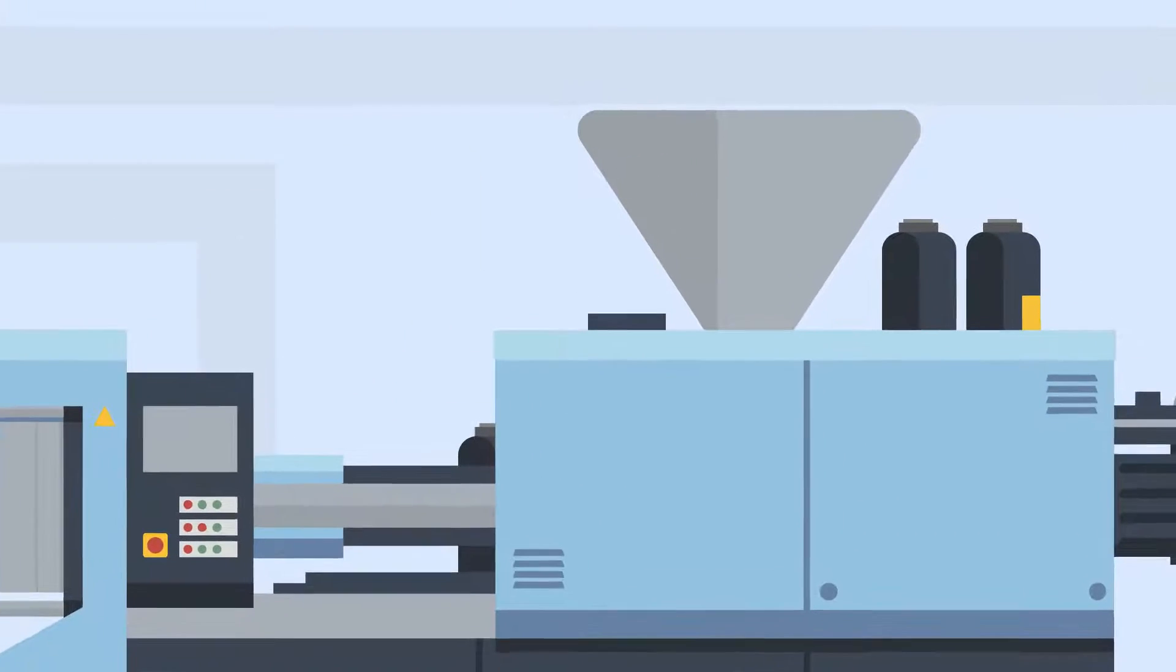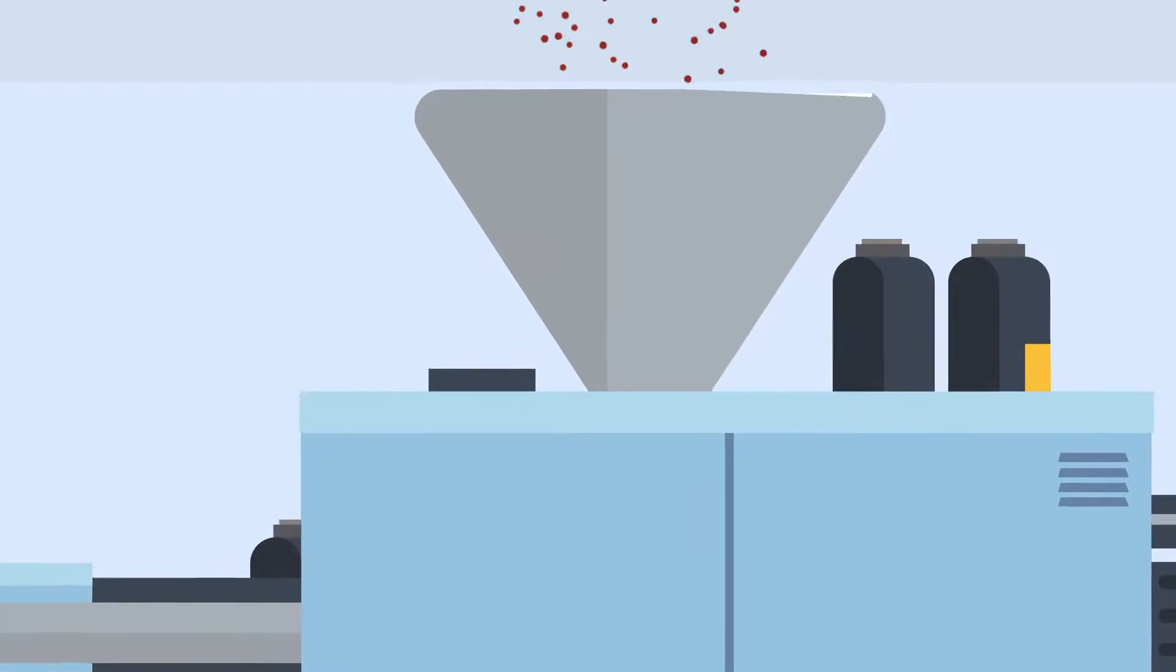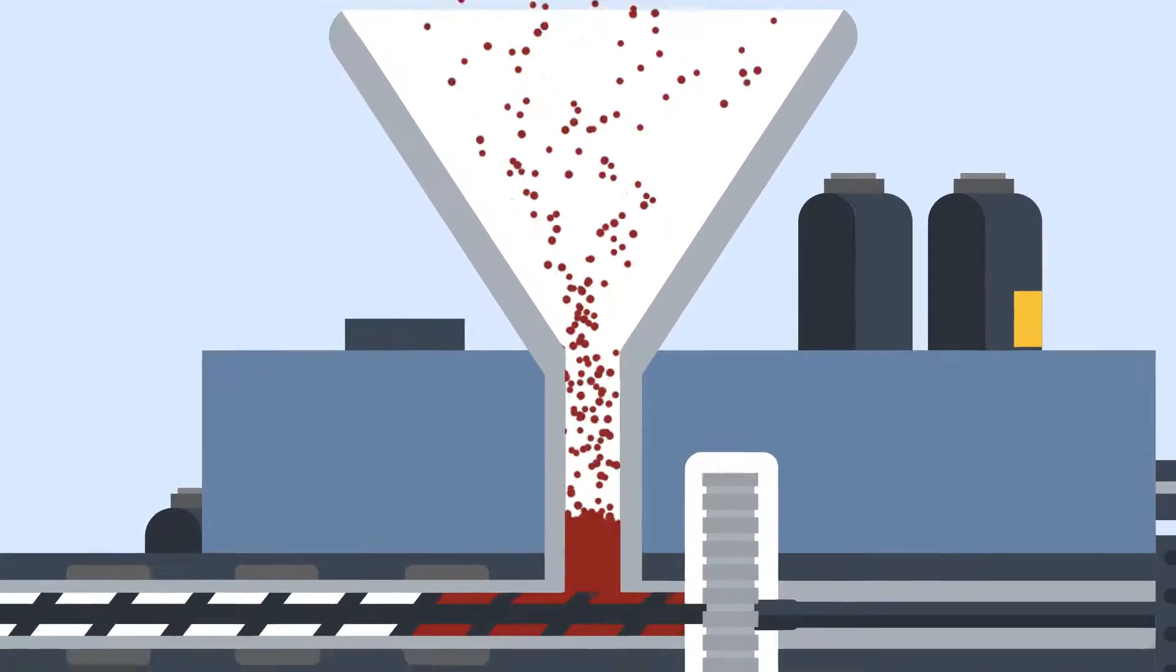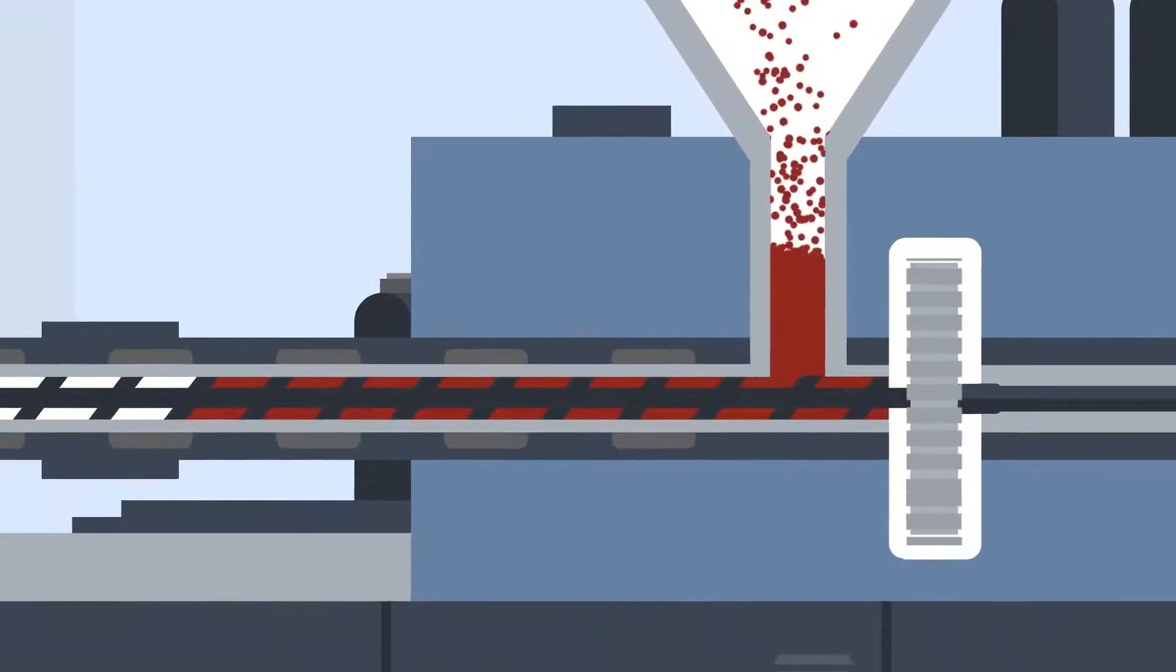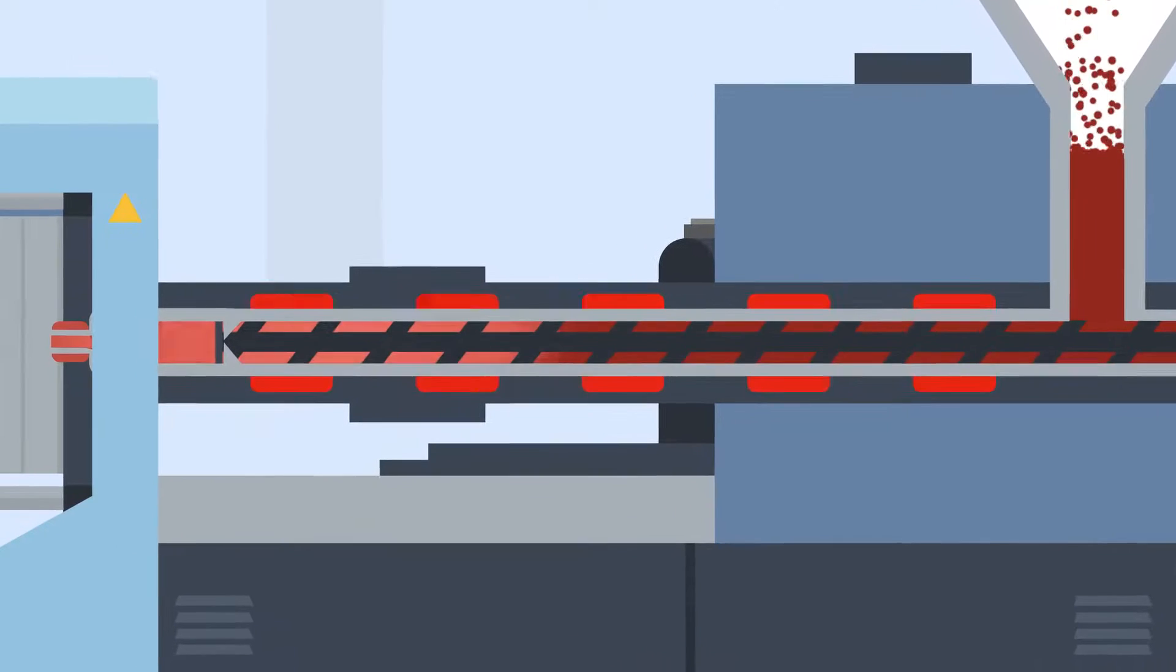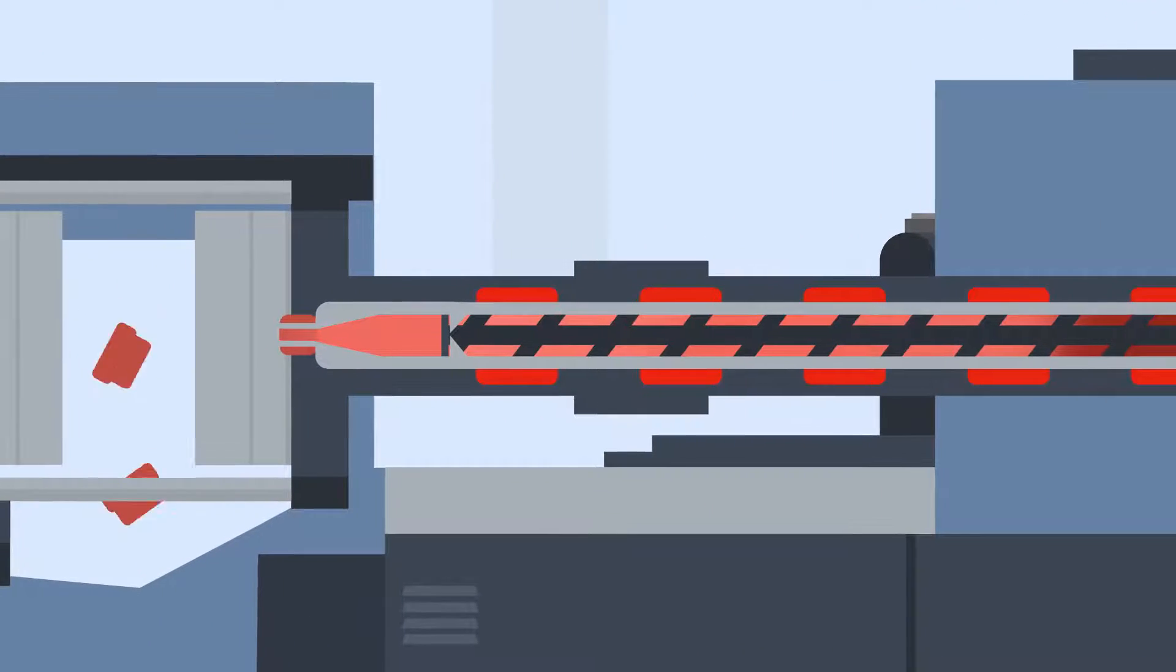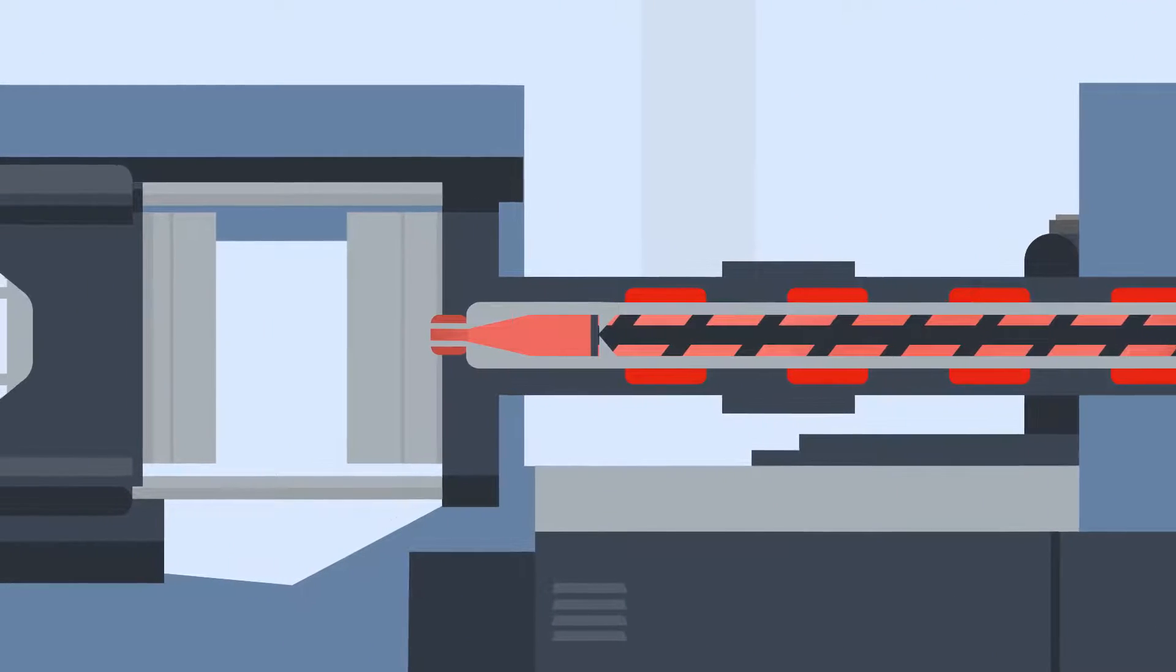First, raw plastic pellets are poured into the hopper at the top of the machine. This can be one type or a combination of different plastics. The pellets are then heated within a temperature-controlled cylinder, called the machine barrel, until it is molten.